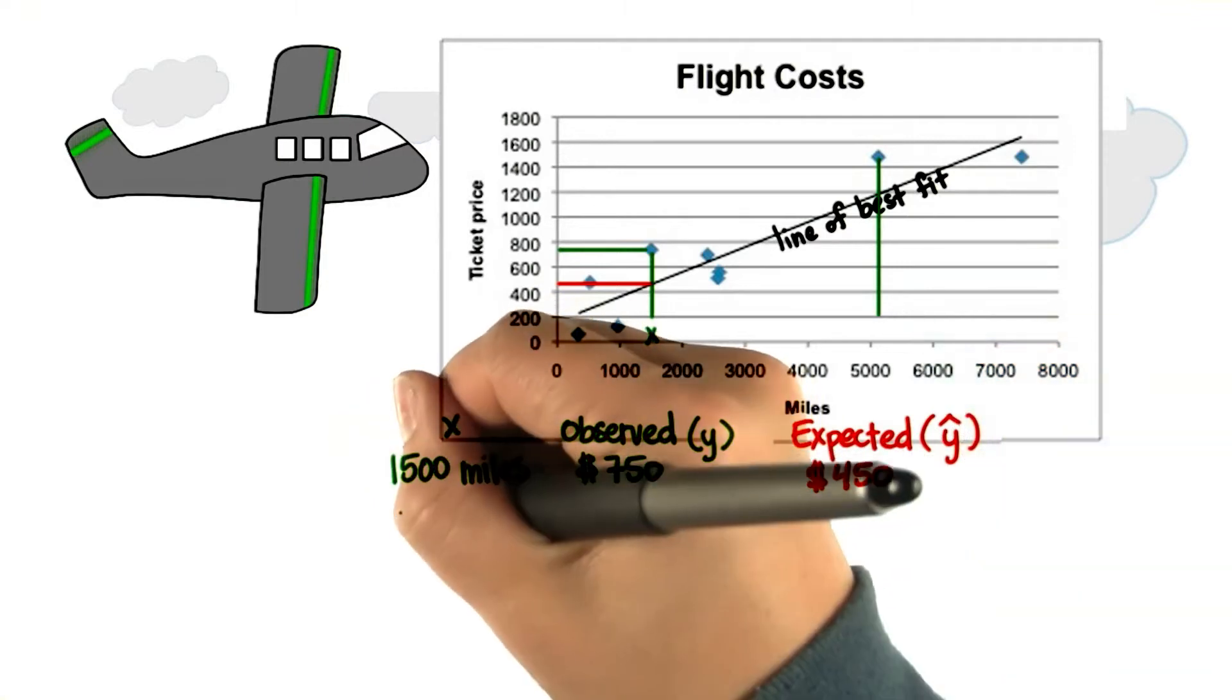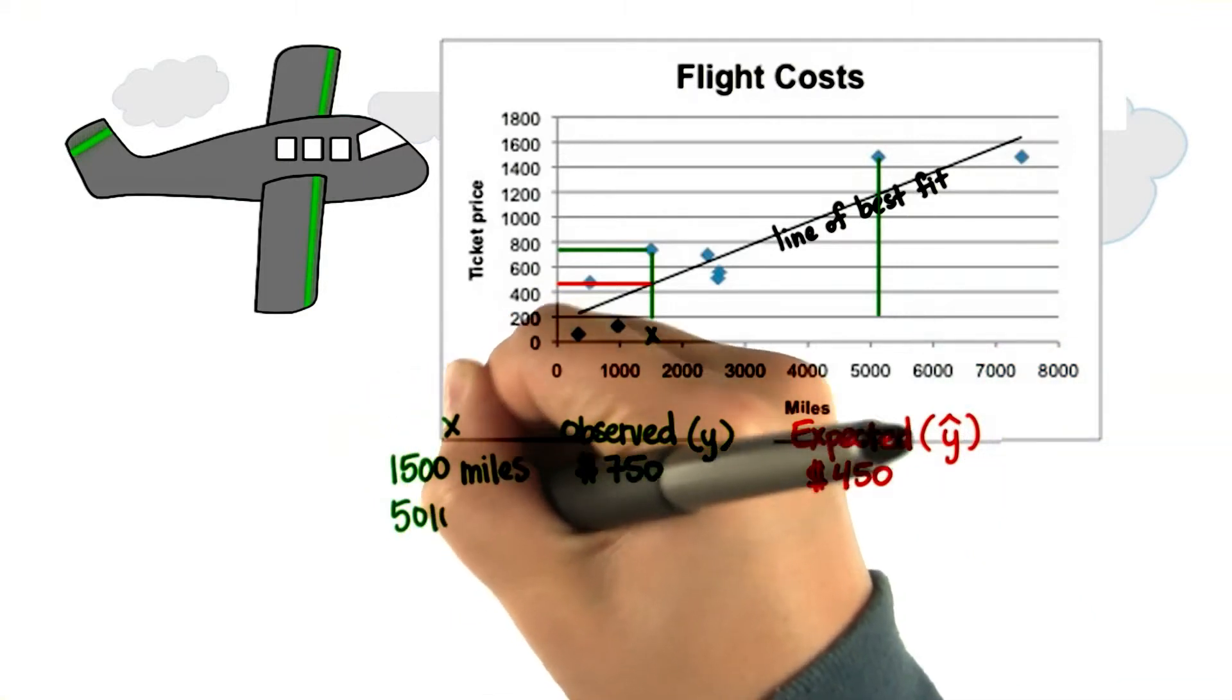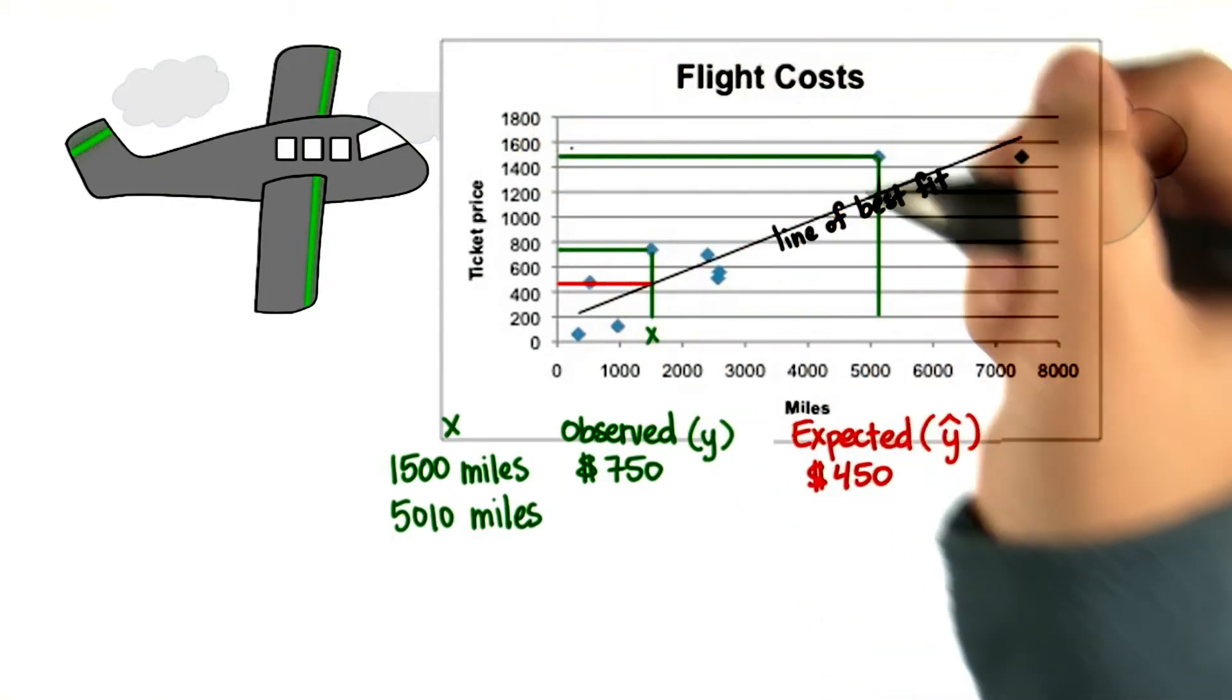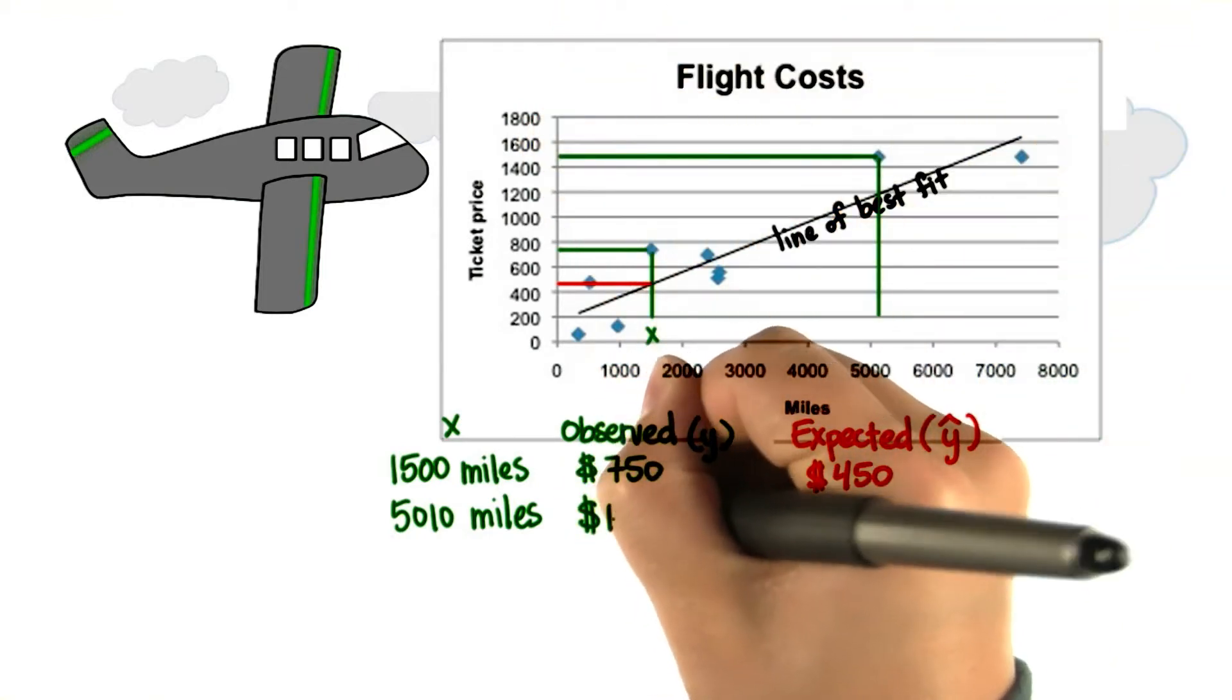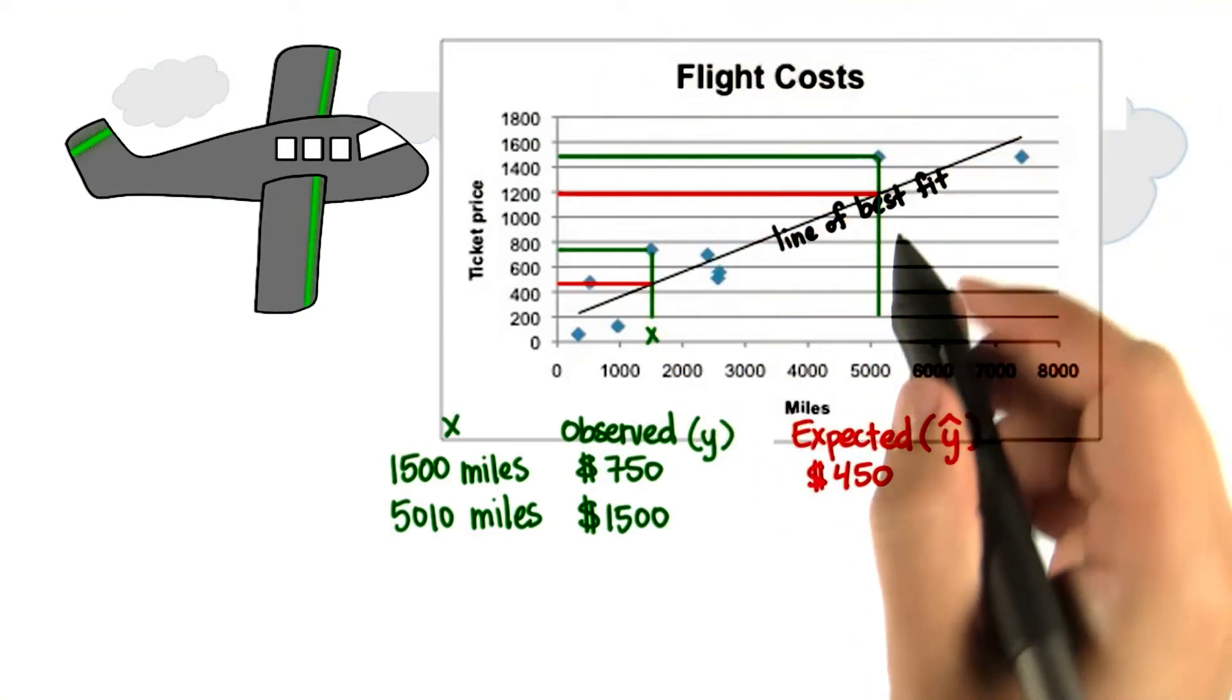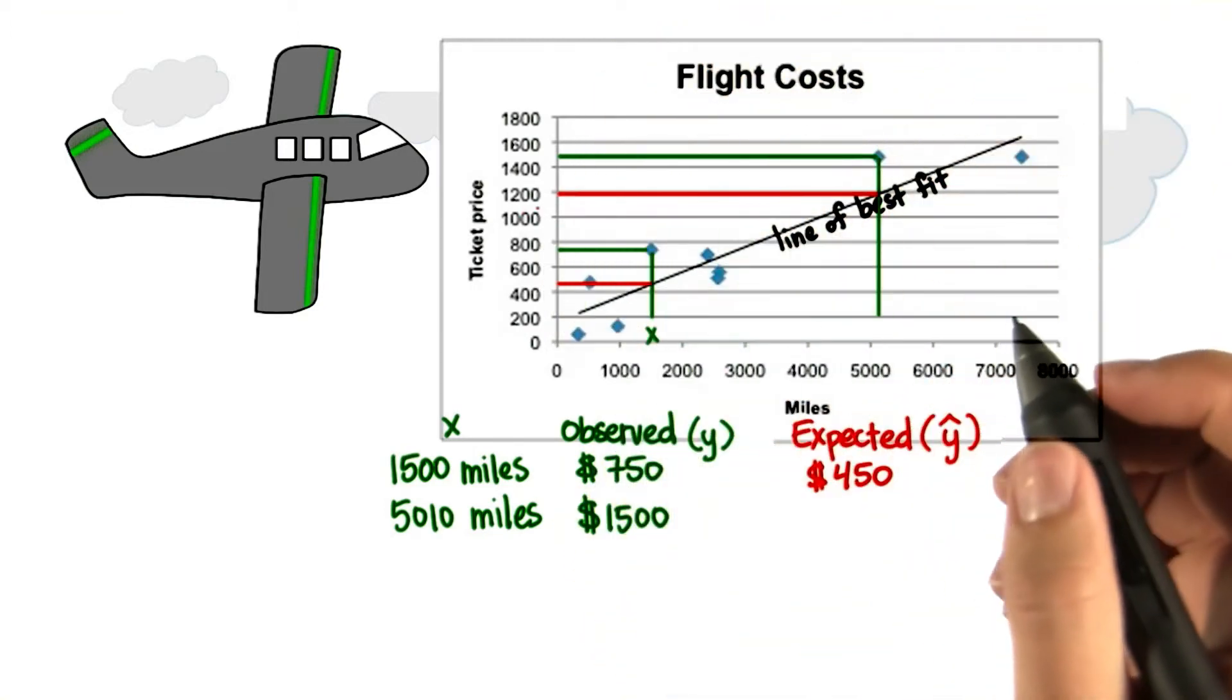Take this one for example. We travel about 5,010 miles, let's say, and the actual or observed price was about $1,500. But according to our line of best fit, we would have expected this to cost about $1,200.